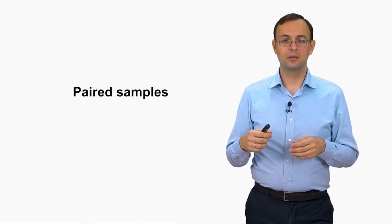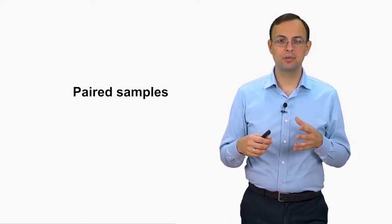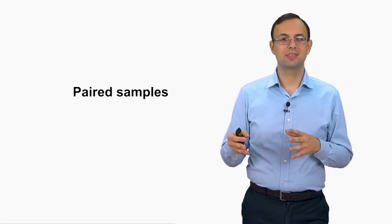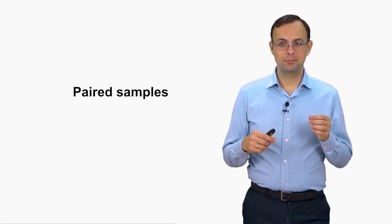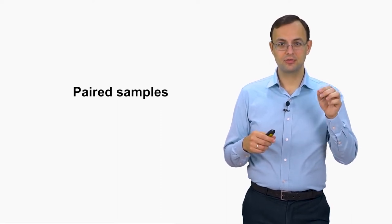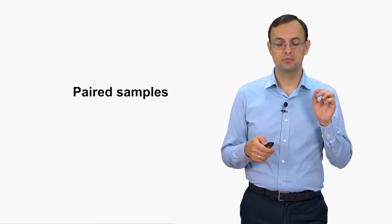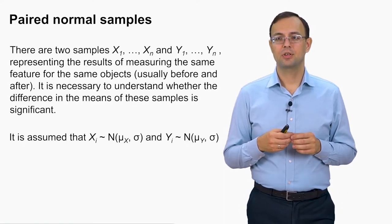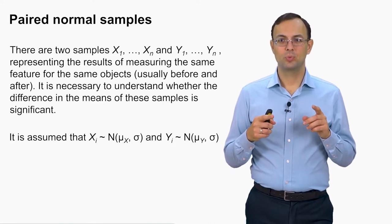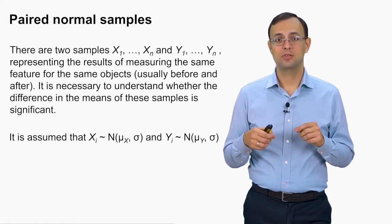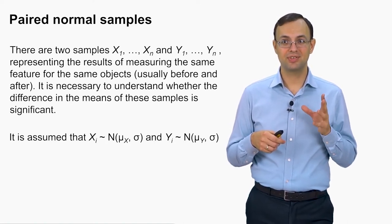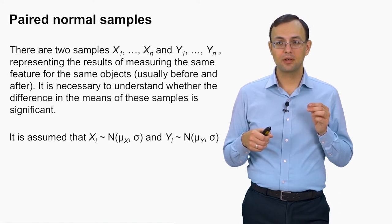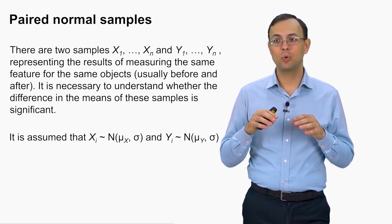Or like spendings of people before and after their salaries were increased, and so on. Paired samples means that our observations are observations of the same objects — two samples are observations of the same objects in different situations. We have samples x1 to xn and y1 to yn. Since the objects are the same, the sample sizes are also the same. The x's are measurements before and the y's are measurements after.